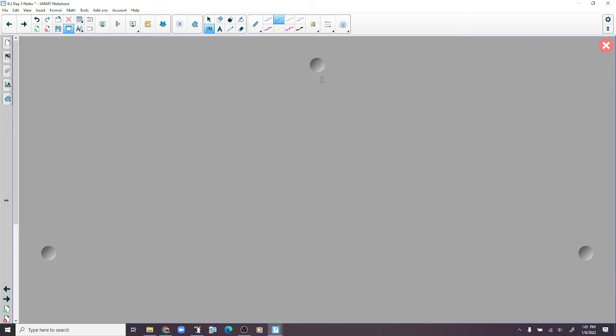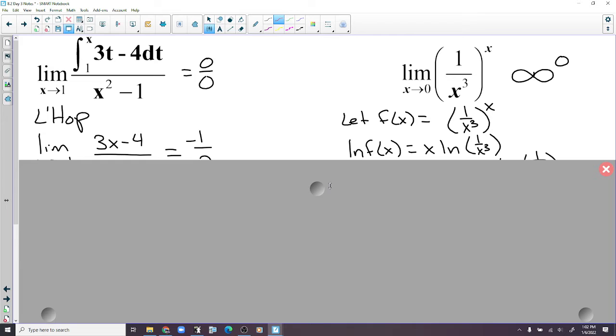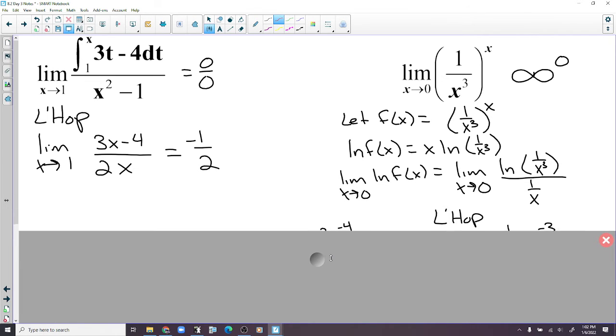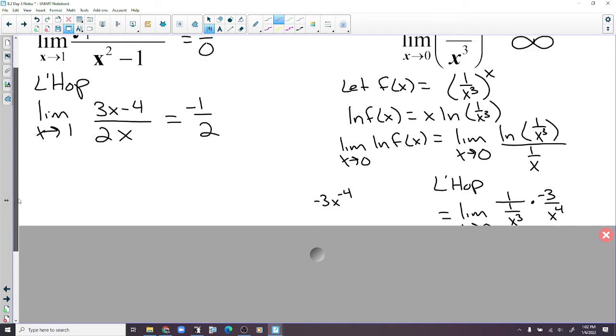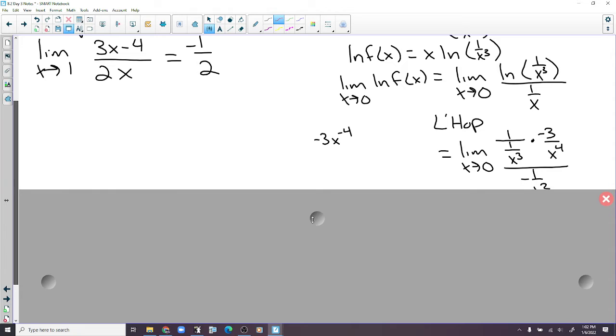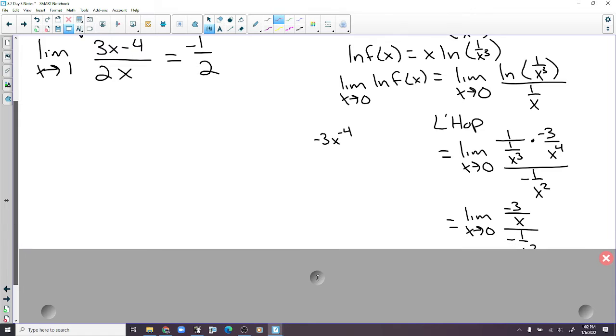Over here, we're going to let f of x equal the function. Take the natural log, bring the x down. Instead of multiplying by x, we'll divide by 1 over x. And then, let's see. The derivative of natural log is 1 over this, which is really just x to the 3rd. But we can write it as 1 over 1 over x to the 3rd. We're going to get the same thing anyway.